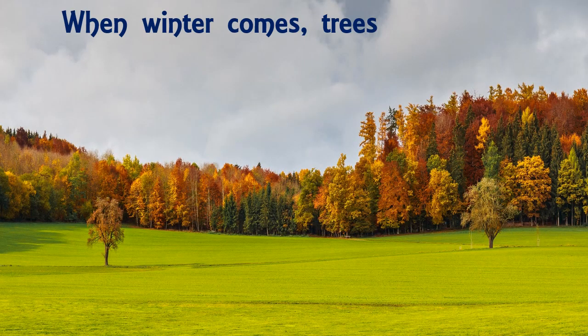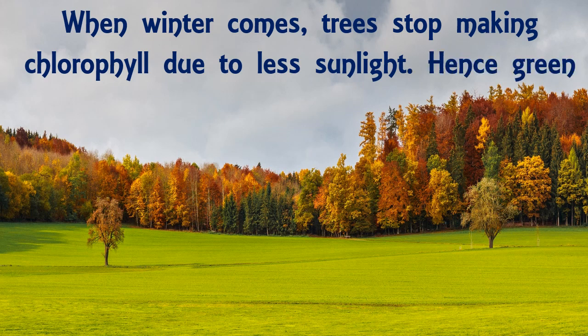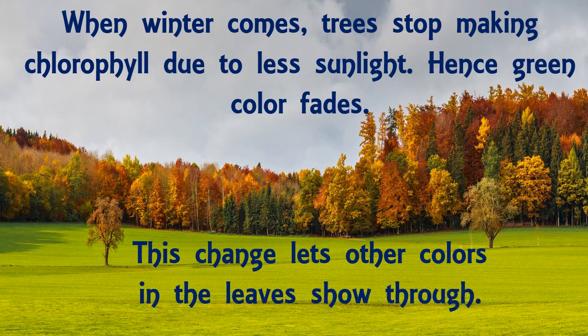When winter comes, trees stop making chlorophyll due to less sunlight. Hence the green color fades. This change lets the other colors in the leaves show through, and that is why we can see colorful leaves in autumn.